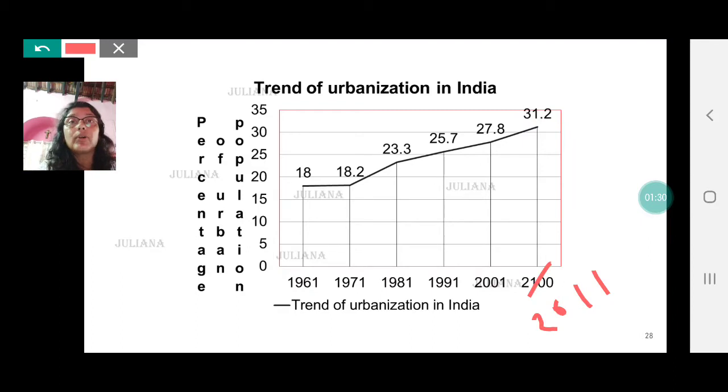Now I would like you to pause the video for a little while and calculate the growth rate of urban population. How do you do that? 18.2 minus 18 becomes 0.2. Once you do that then it will be easier for you to find out between which decade was the growth in urban population highest. Pause the video and come back.